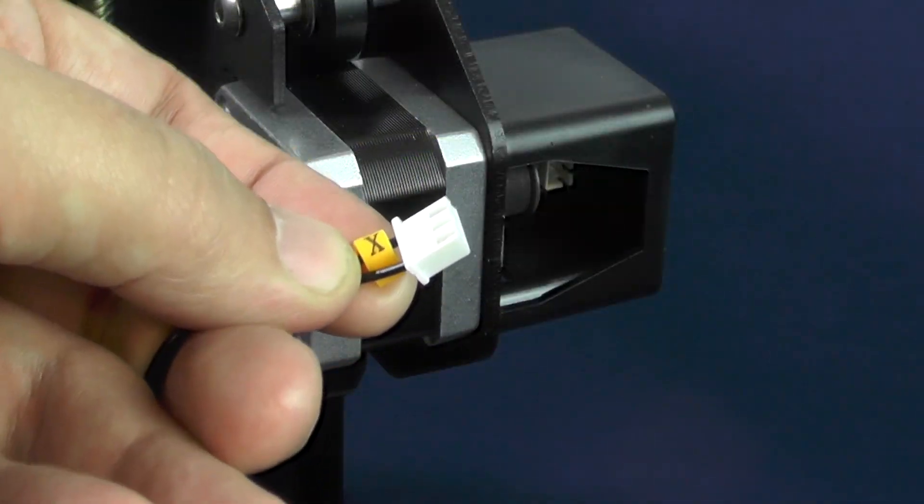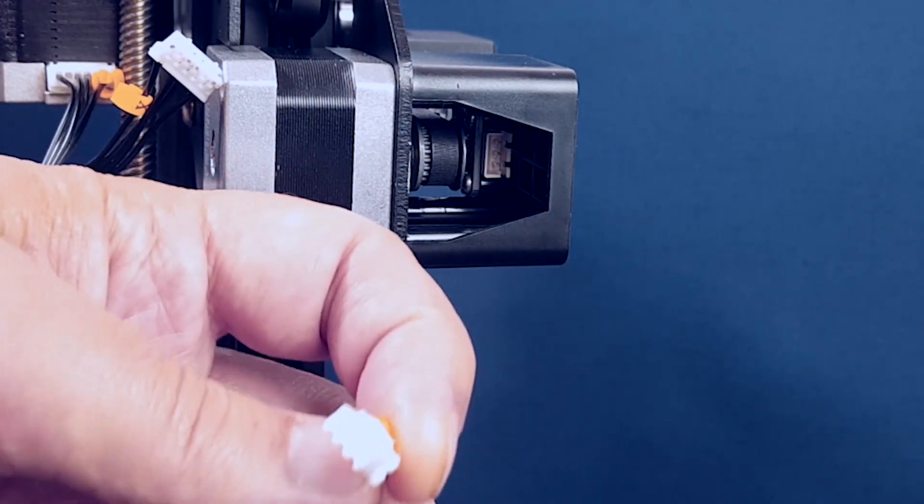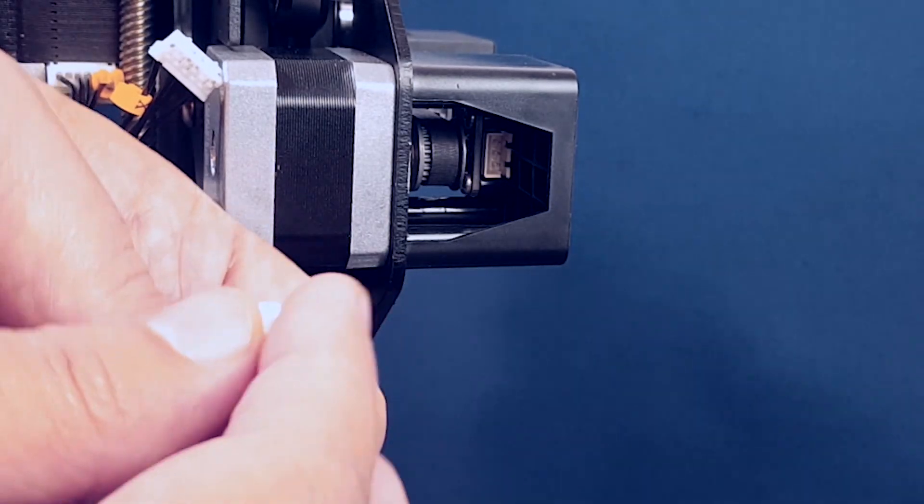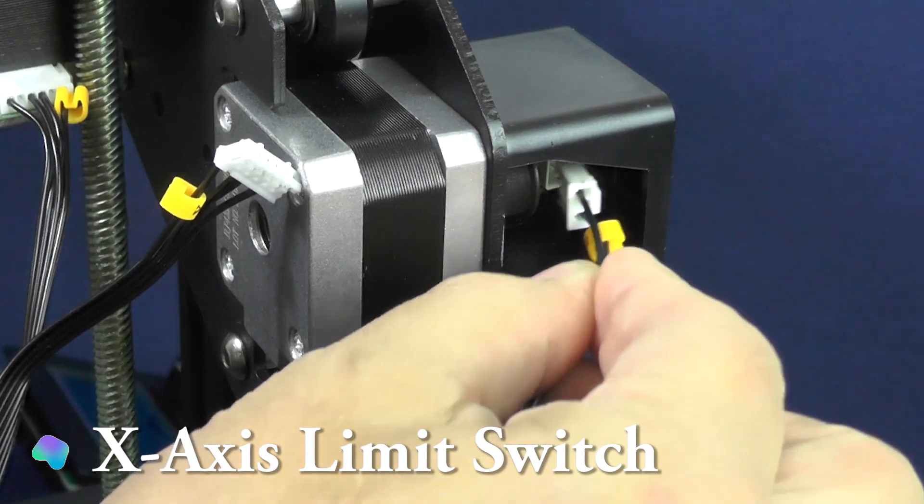Now, we will install the smaller connector featuring the letter X. It should be plugged on the X-axis limit switch.